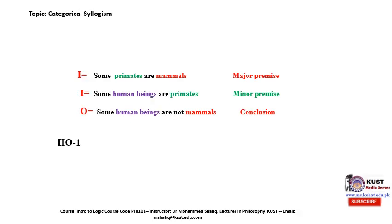Another example: the first premise says 'Some scientists are unknown' — a particular affirmative depicted by letter I. The minor premise says 'Some human beings are finite' — also depicted by letter I. The conclusion says 'Some human beings are not many' — a particular negative depicted by letter O. The middle term in the major premise is the subject, and in the minor premise it is the predicate. That means the figure is 1. So the form of this categorical syllogism is IIO-1.